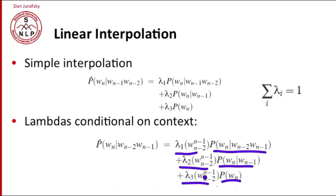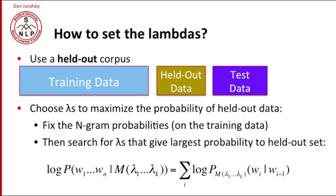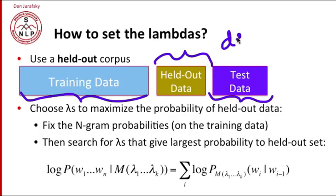So where do the lambdas come from? The normal way to set lambdas is to use a held out corpus. So we've talked before about having a training corpus. So here's our training corpus and our test corpus. A held out corpus is yet another piece that we set aside from our data. And we use a held out corpus. Sometimes we use a held out corpus called a dev set, a development set, or other kinds of held out data. We use them to set meta parameters and check for things. So we can use the held out corpus to set our lambdas. And the idea is, we're going to choose lambdas which maximize the likelihood of this held out data.